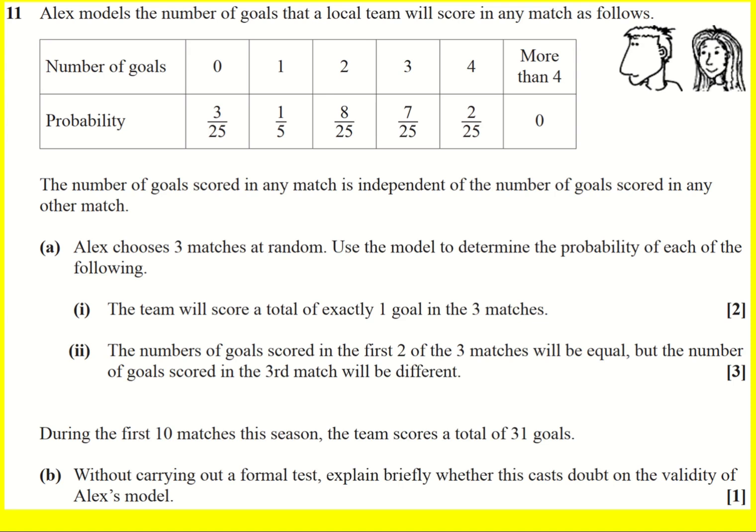Of course, that's not quite true in reality. We get things like form and teams go on a run of scoring lots of goals and then maybe not scoring many. So they can affect each other. But we need to make that assumption to be able to do some calculations. Alex chooses three matches at random. Use the model to determine the probability of each of the following. Part one.